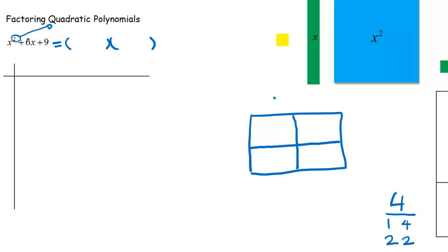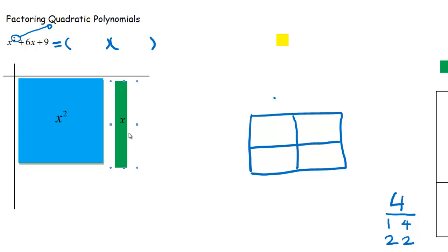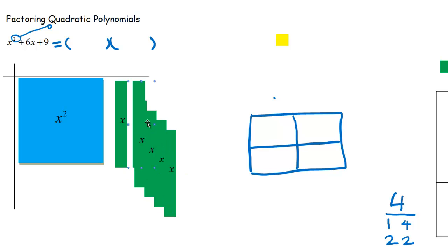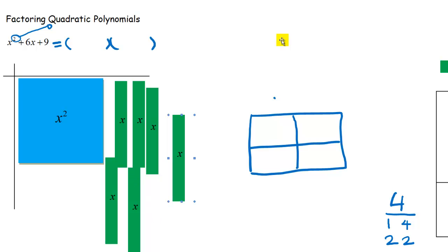I'm going to get my pieces out. Here's x squared — that nice blue piece. Then for six x, because it's positive I'll grab my green tiles: one, two, three, four, five, six. So I have those six tiles. And then plus nine little unit pieces, so I need nine of these small squares: one, two, three, four, five.